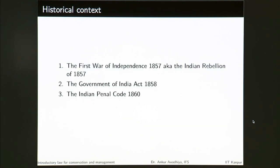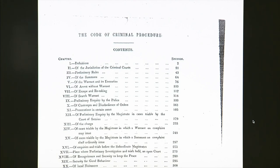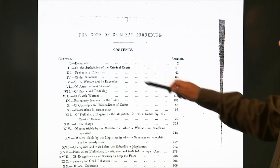Looking at the historical context, the First War of Independence of 1857, also known as the Indian Rebellion of 1857, had just ended. The Government of India Act of 1858 made provision that Company Rule would be replaced by Crown Rule — India was to be governed directly by the Crown of Britain. Because they had to begin this rule, they came up with different kinds of acts. In this context, the IPC was made in 1860, just two years after this. The CrPC of 1861 divides the whole law into different chapters: Chapter 1 deals with definitions, Chapter 2 with jurisdiction of criminal courts, Chapter 3 with preliminary rules, then summons, warrant, execution of warrant, arrest without warrant, escape and retaking, and search warrant.